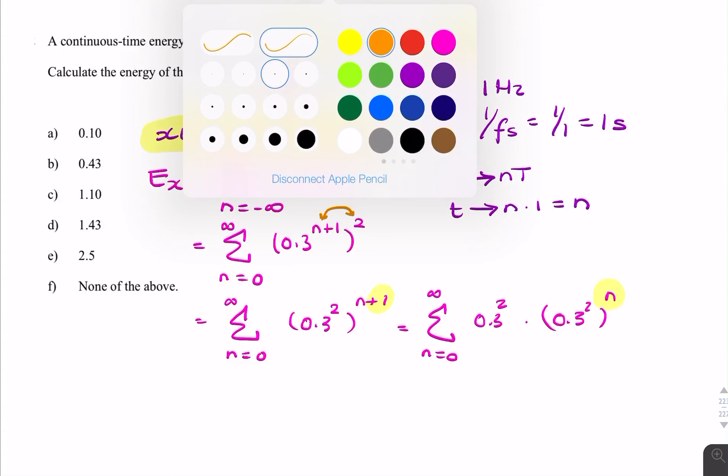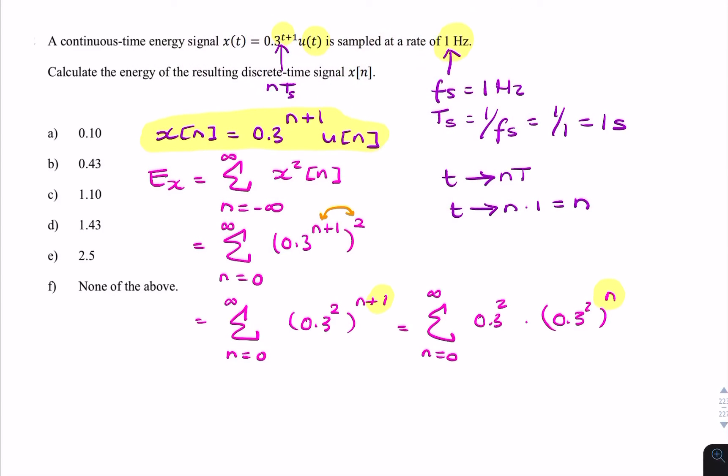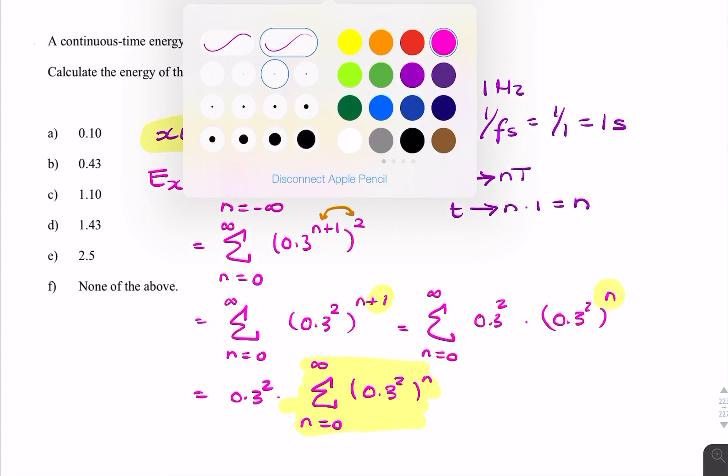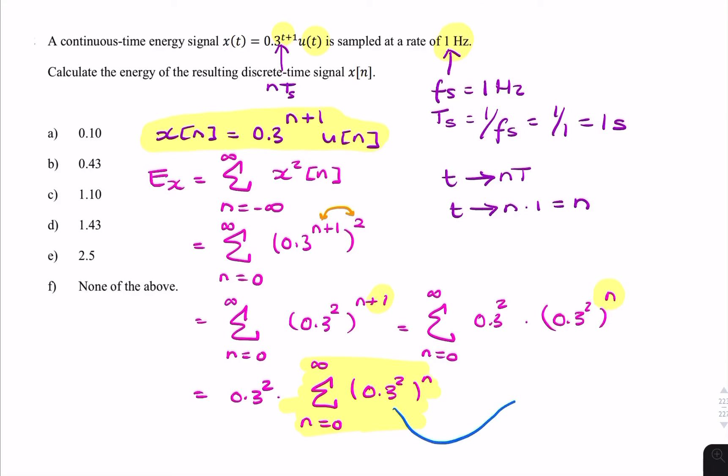So last step, we can say that 0.3 squared times the summation from n equals 0 to infinity of 0.3 squared to the power n. Now that there, that is our Taylor series, which we can represent as 1 over 1 minus 0.3 squared.